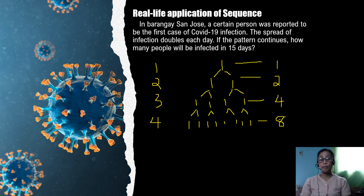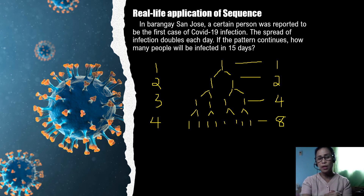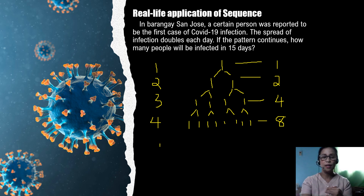Now let's see what will be the rate of change on a daily basis. Although it's already mentioned that the rate of infection doubles each day, let's verify. From one person times two, we get two; times two gives four; times two gives eight. So it is really doubling. Our ratio, or rate of change, has a constant value of two.